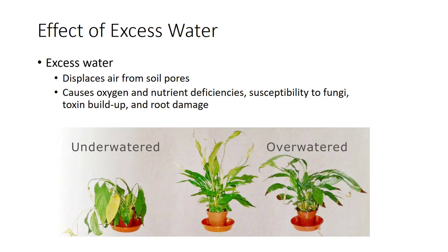Excess water available to the plant stretches the cells to cause long internodes and large leaves — put another way, the plant stretches. Many greenhouse operators grow dry, keeping the plant on the dry side to prevent root rots and stretch, decreasing the need for pesticides and growth regulators.